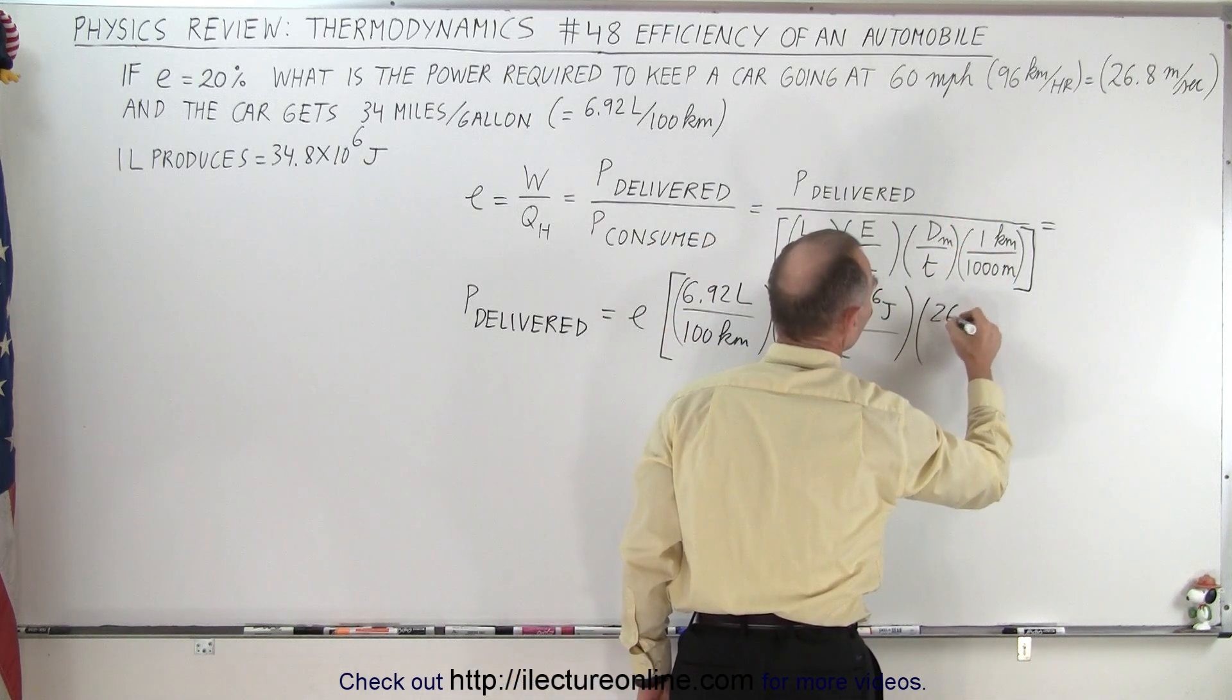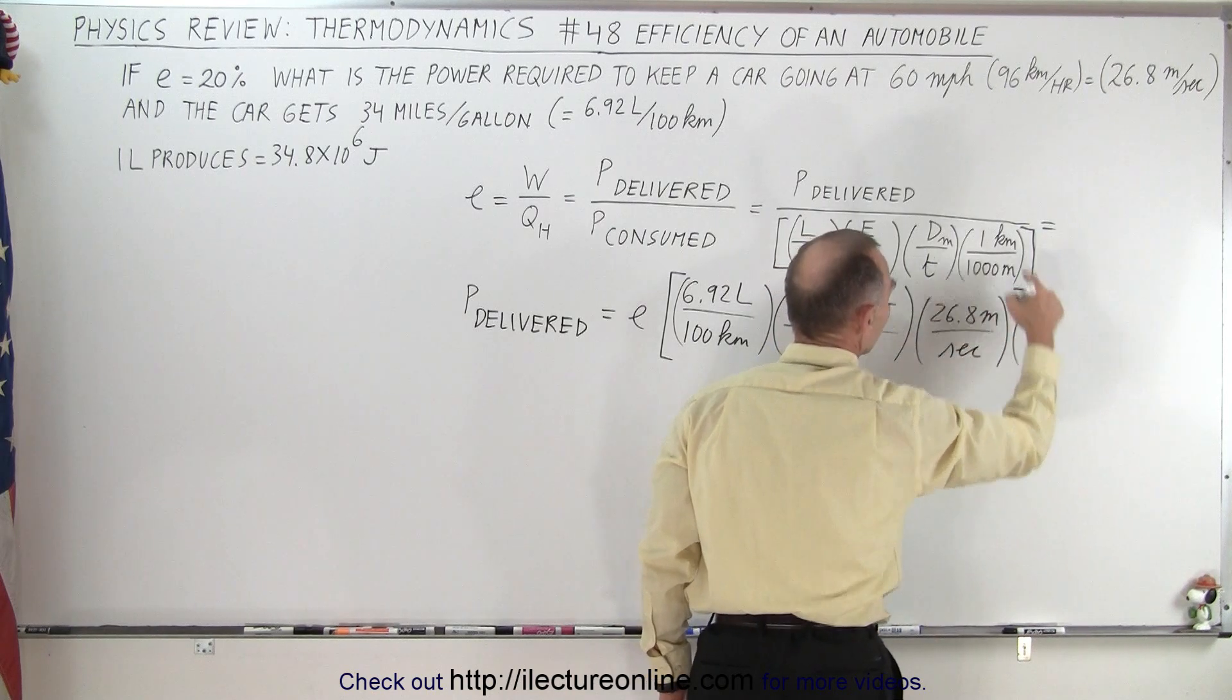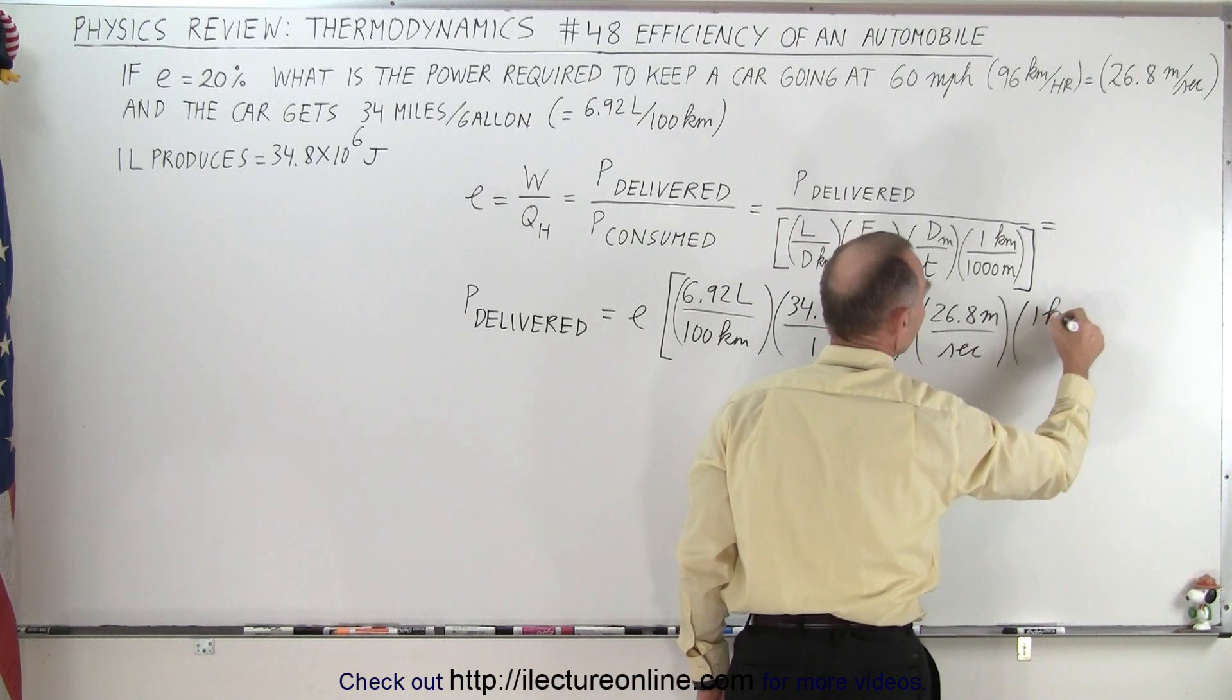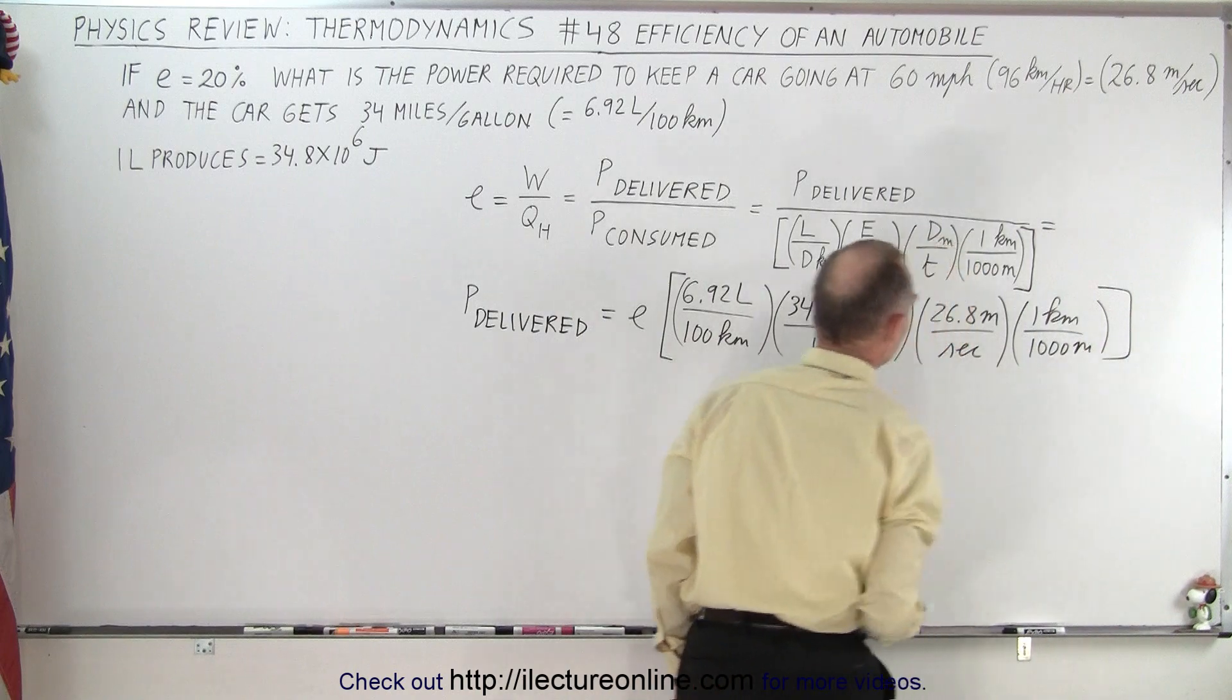Distance per time, that gives us 26.8 meters per second. And now, of course, we have to multiply that times one kilometer divided by 1,000 meters like this.